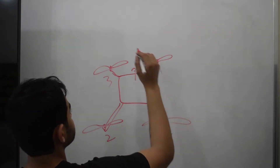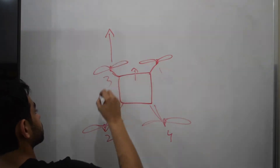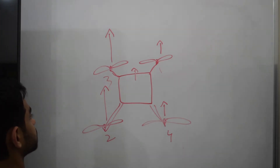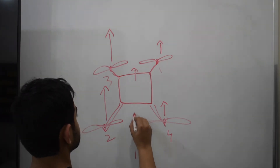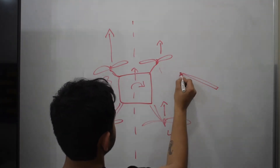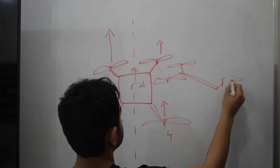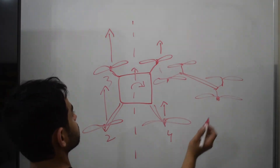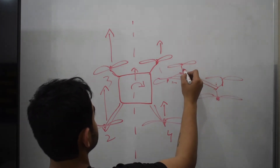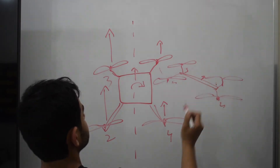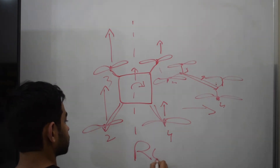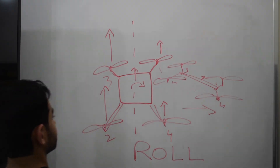It's facing the top of the board. When the thrust generated by the left two motors, which are 2 and 3, is higher than the right two motors, which are 1 and 4, it rotates around the axis of its length and tilts towards its right. This movement is called roll, and it helps us move the drone left or right.